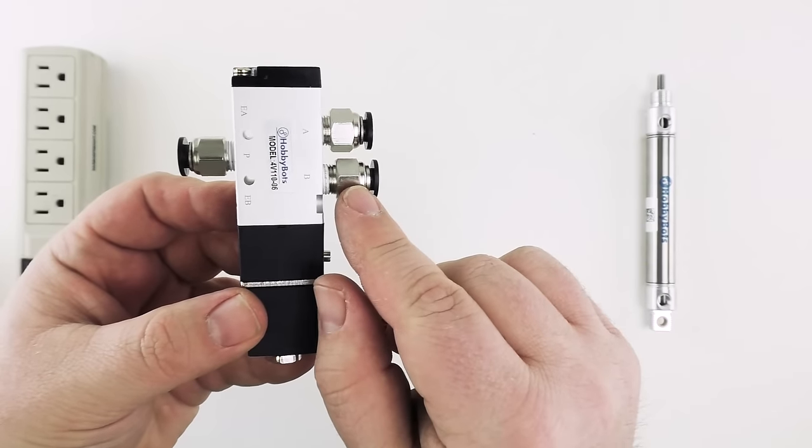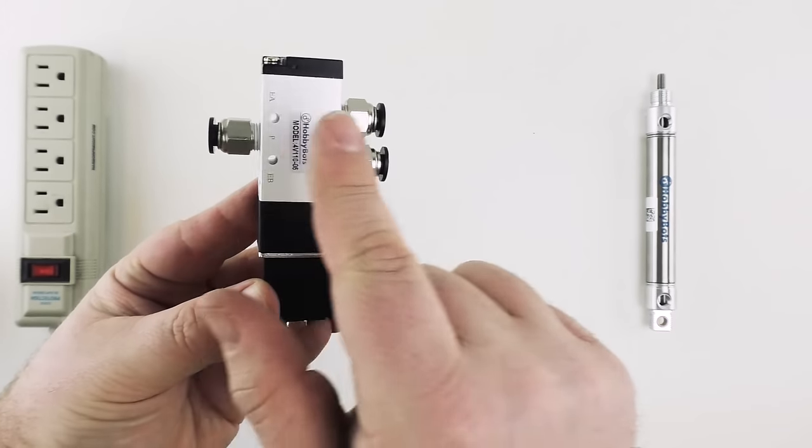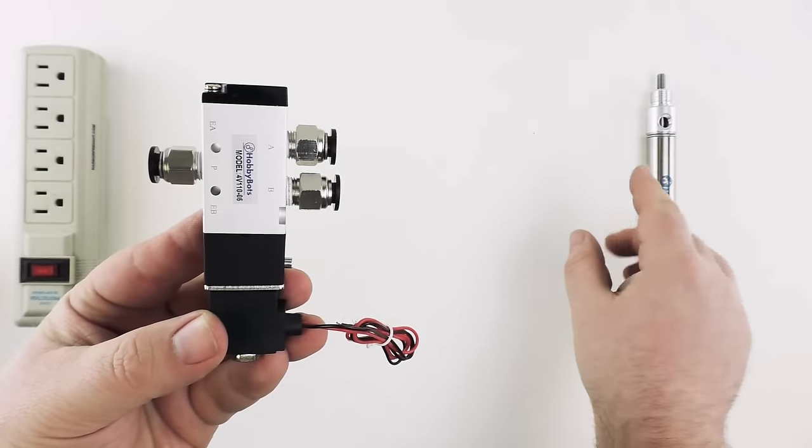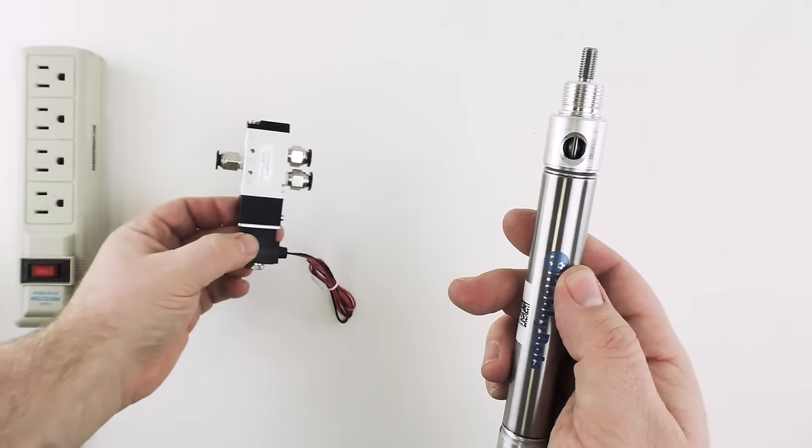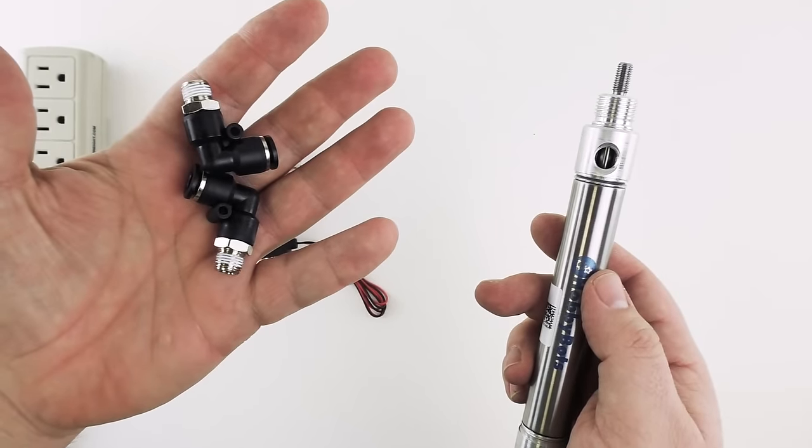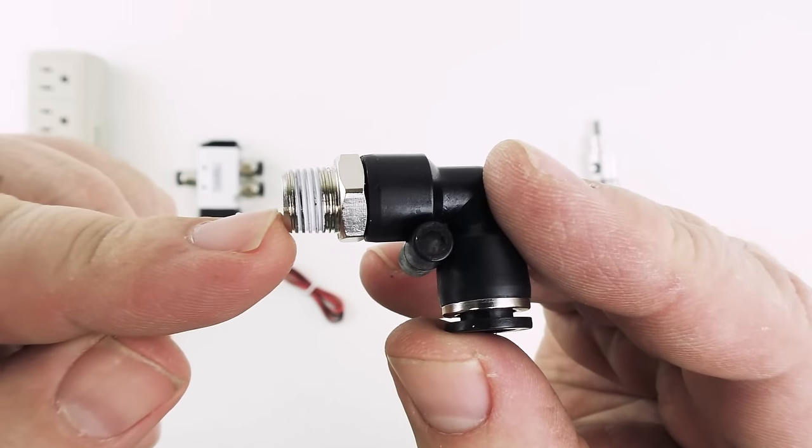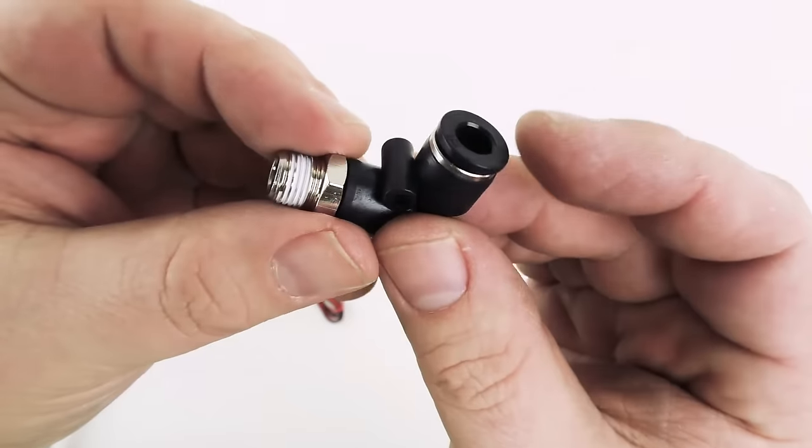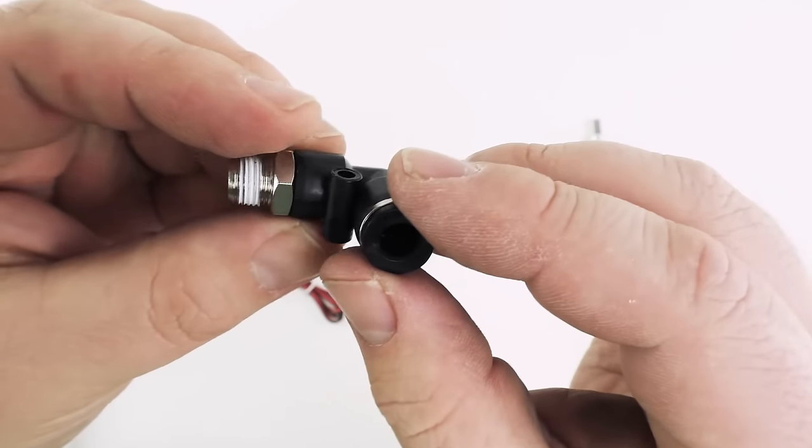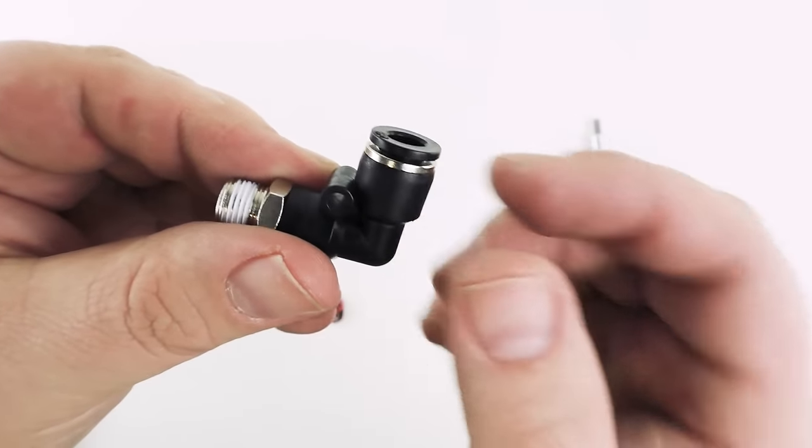Alright so those fittings are installed, that's how we're going to get air into and out of the solenoid. Now we need to be able to get air into the cylinder. For that we have these elbow fittings. These fittings are similar to the ones we just used. They have a threaded end here. They turn at 90 degrees and then they have the plastic ring for inserting your air line. Quarter inch again.